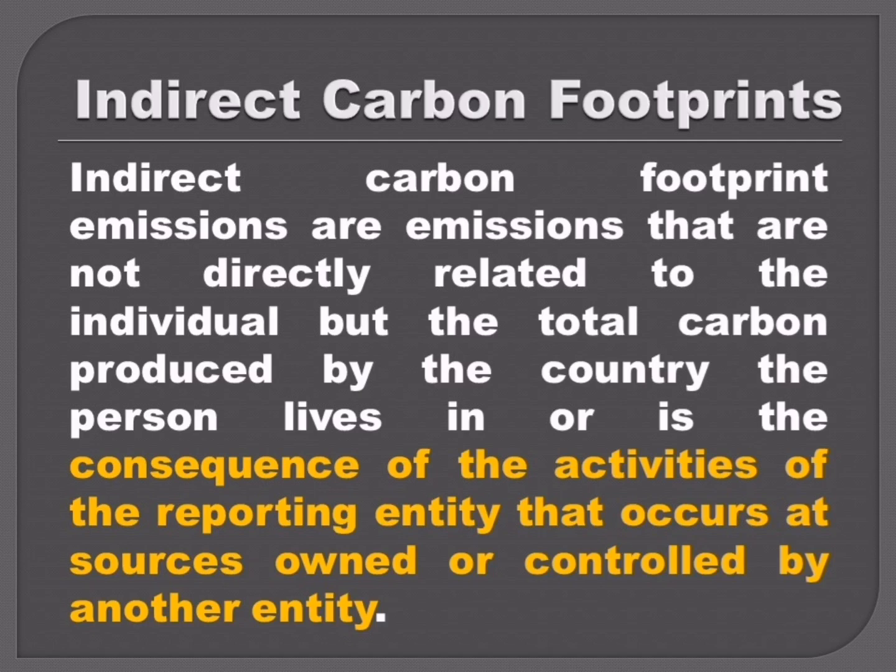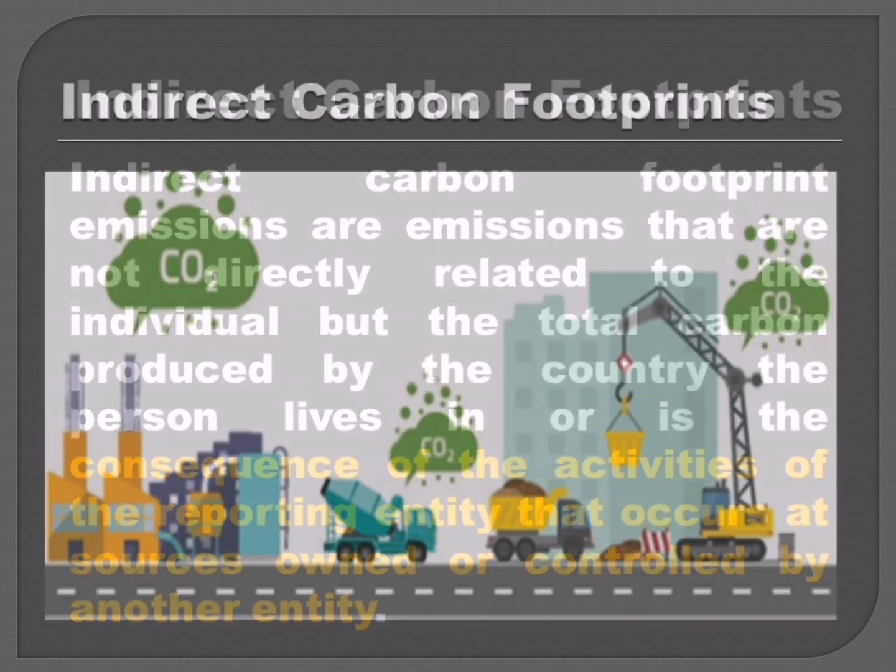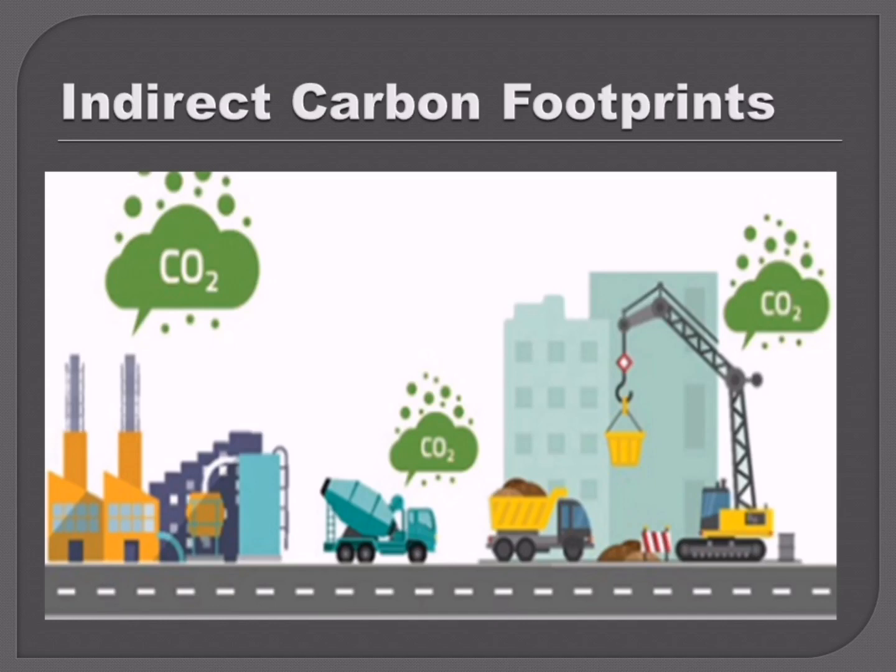These emissions directly connect a person to their influence on the environment. On the other hand, indirect carbon footprint emissions are those emissions not directly related to the individual, but are the total carbon produced by the country the person lives in, or are the consequence of activities of the reporting entity that occur at sources owned or controlled by another entity. For instance, the production of tires for a car consumes electricity which was produced in a thermal power plant through the release of greenhouse gases. This is called indirect carbon footprint.